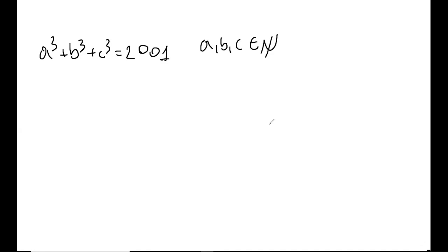Hello fellow problem solvers! Today we're going to be doing a problem from the 2001 Junior Botkin Math Olympiad, problem number one. I suggest you try this nice number theory problem for a minimum of 10 minutes, ideally 30 minutes to an hour, but not more than two hours. If you'd like to follow along, I suggest you take the next five minutes and put your first ideas out on paper. And now without further ado, let's begin!